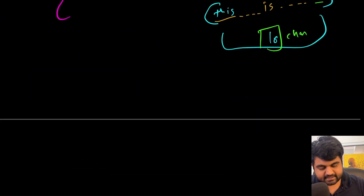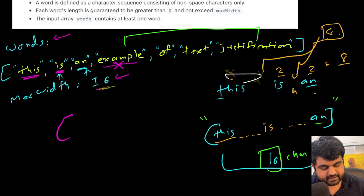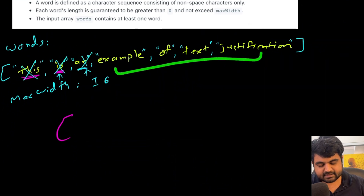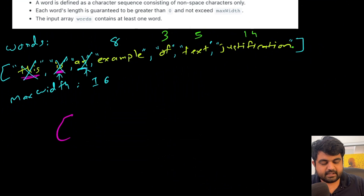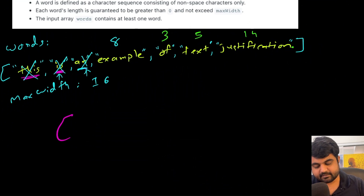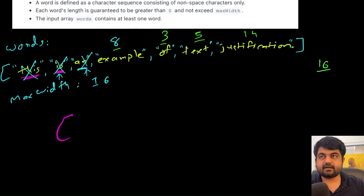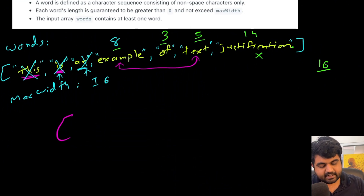For the second line, we repeat the process with the remaining words: 'example', 'of', 'text', 'justification'. 'Example' has seven characters plus a space = 8, 'of' = 3, 'text' = 5. Summing 8 + 3 + 5 = 16, which already hits the max width, so we cannot include 'justification' on this line. We work with just 'example', 'of', and 'text'.